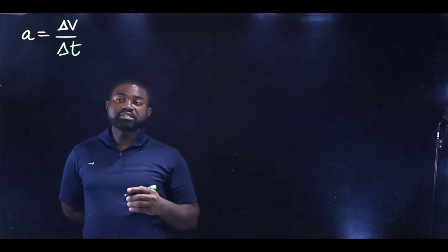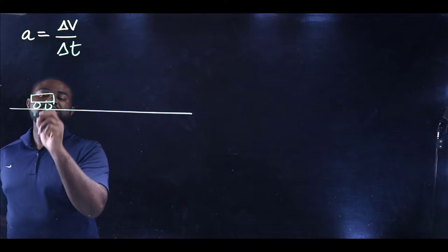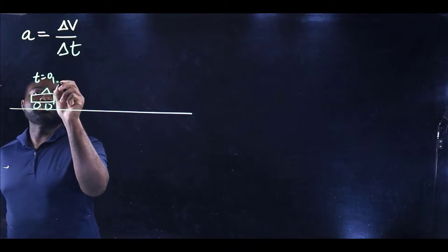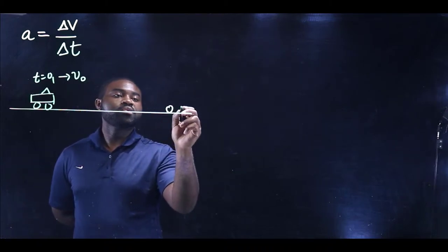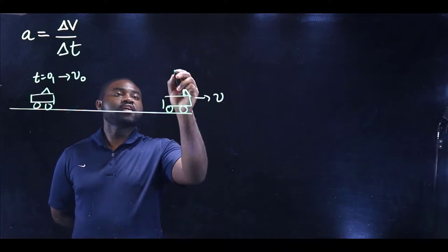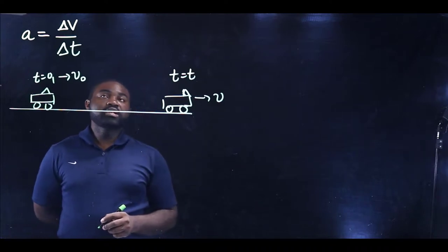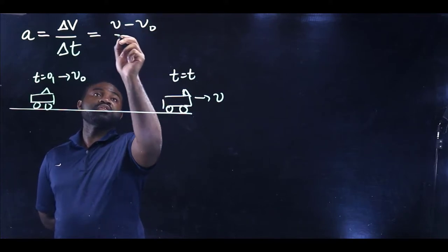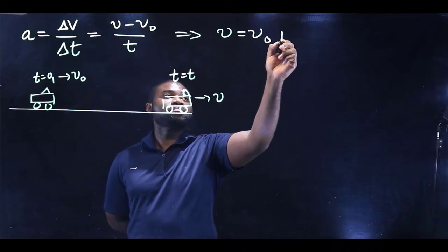Now if at T equal to zero we have a car which is initially at a point moving with a certain velocity V0, and after some time T we measure the velocity of the car as V, then the average acceleration A will be equal to V minus V0, all divided by T. This gives us V equal to V0 plus AT.